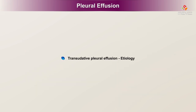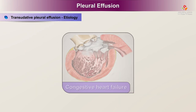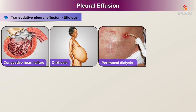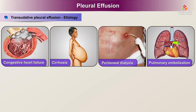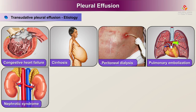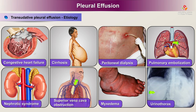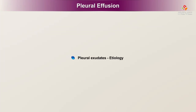Causes of transudative pleural effusion include: congestive heart failure, cirrhosis, peritoneal dialysis, pulmonary embolization, nephrotic syndrome, superior vena cava obstruction, myxedema, and urinothorax.